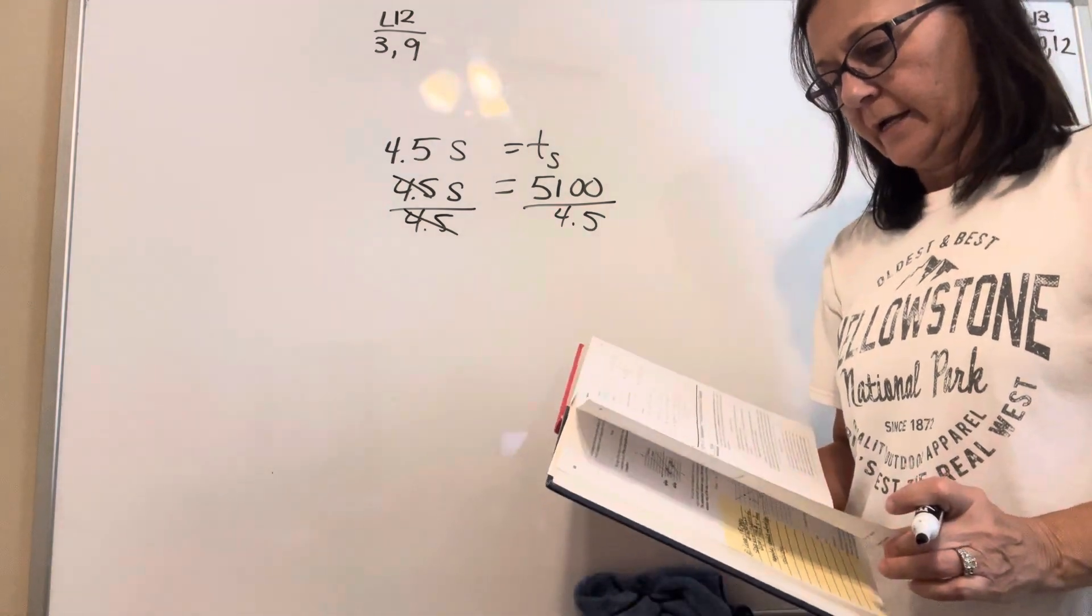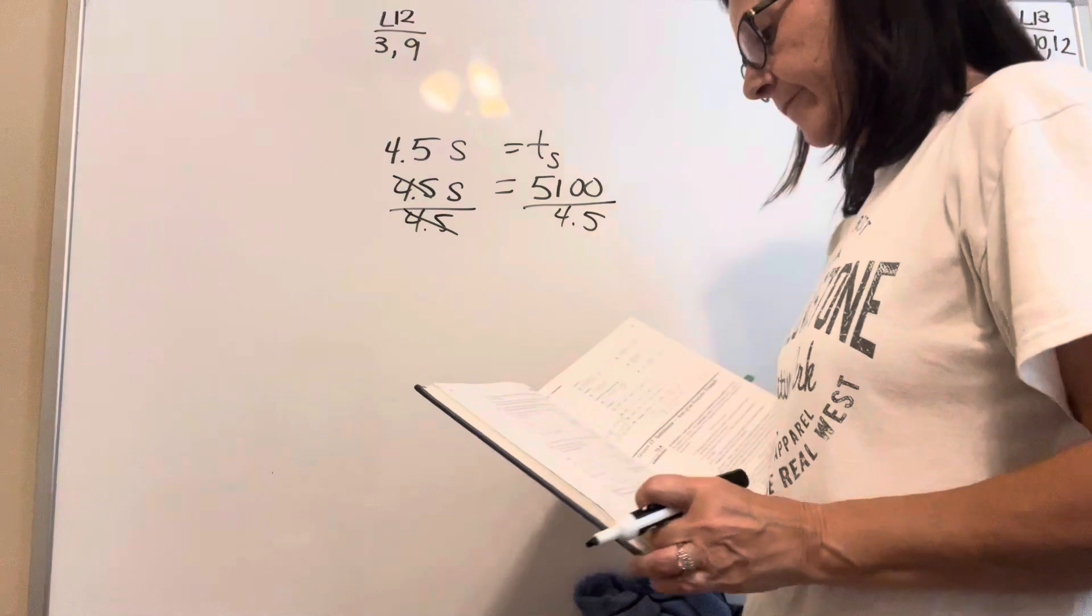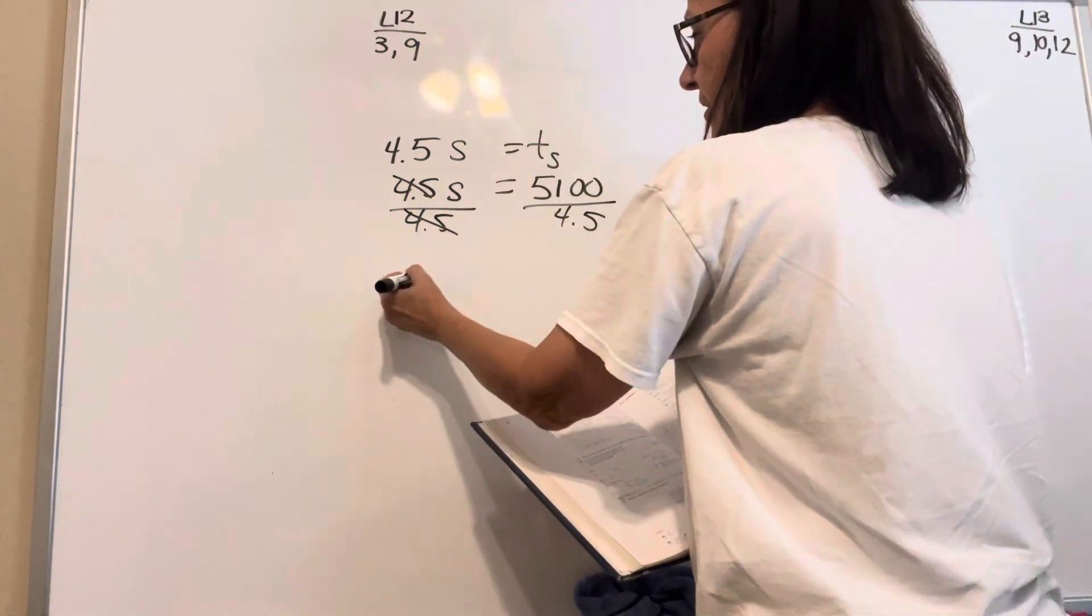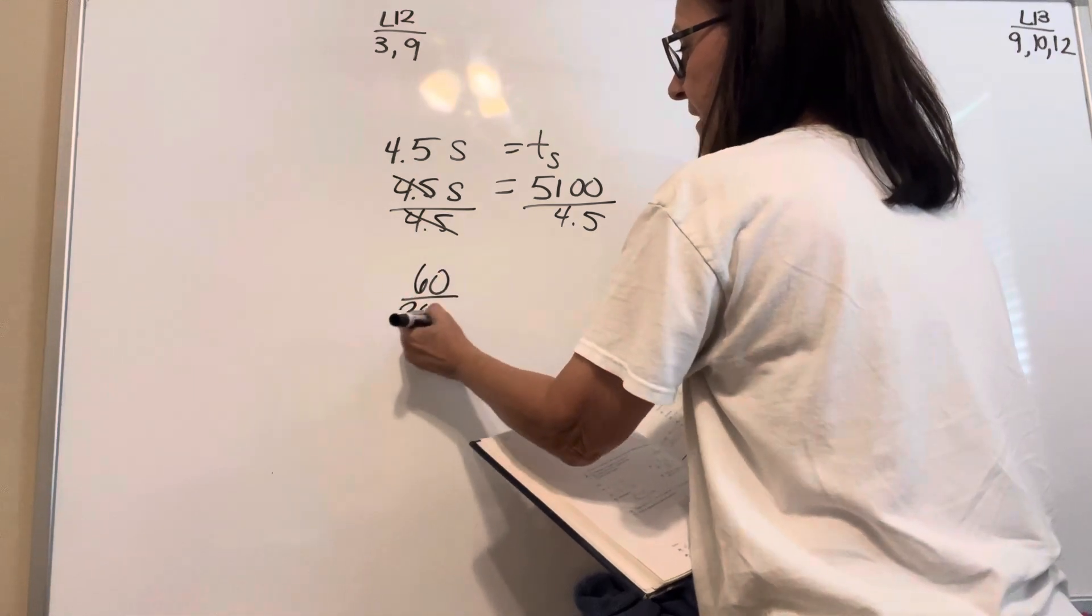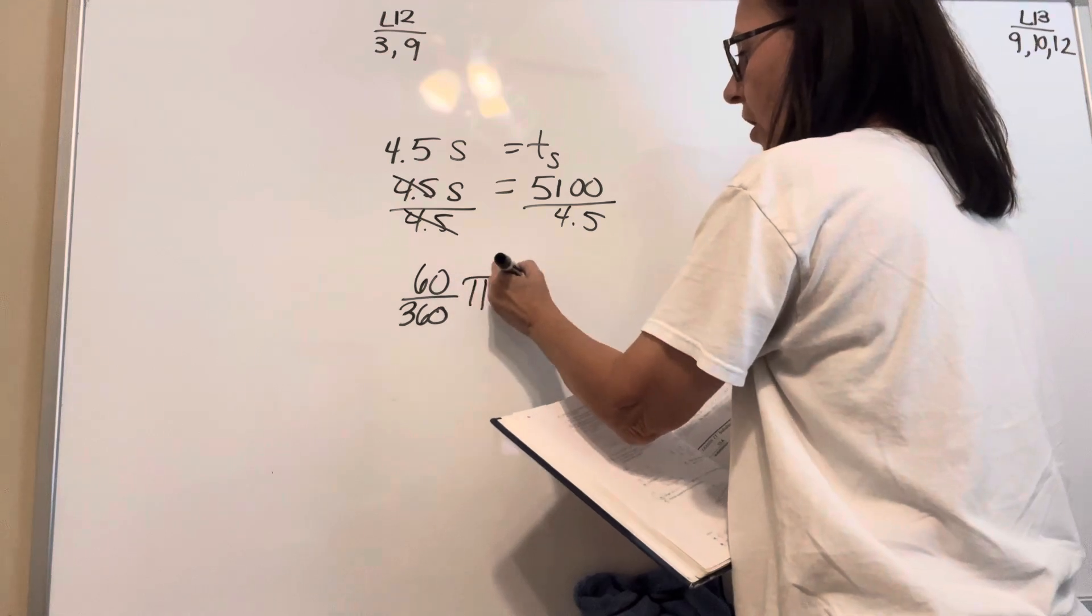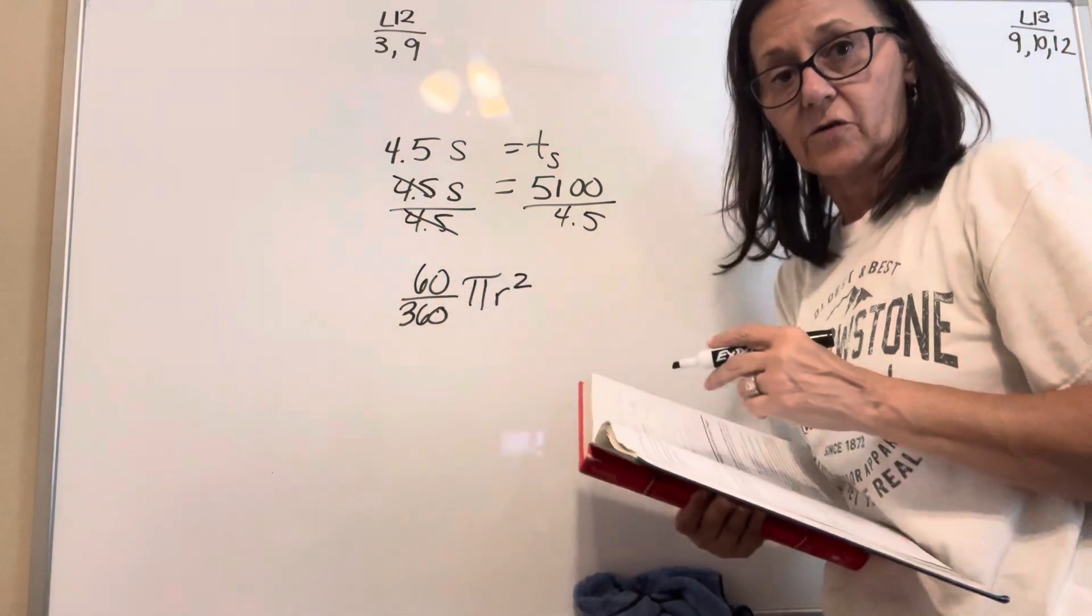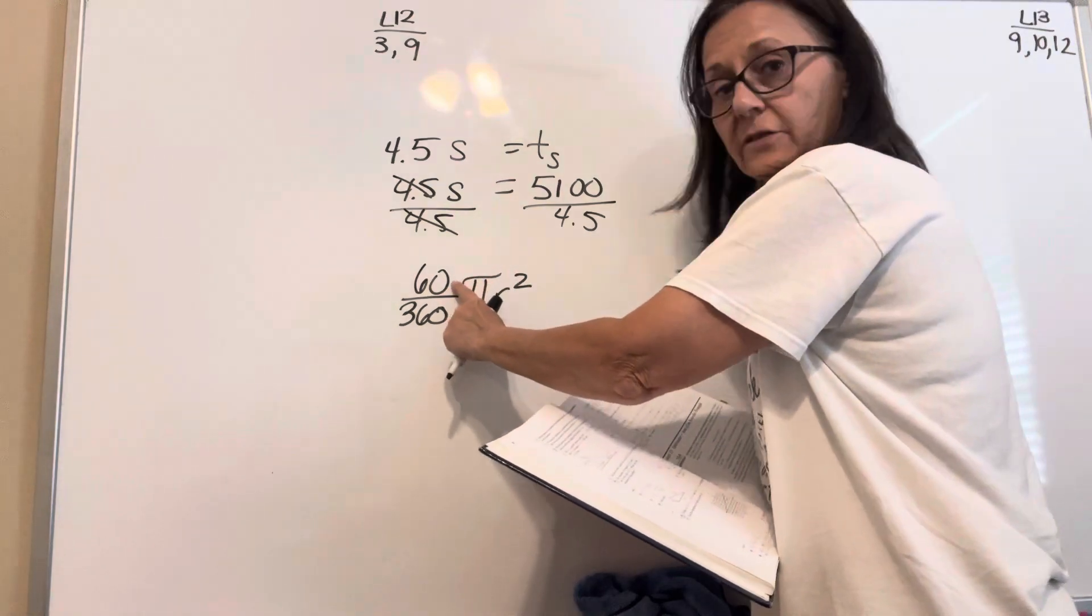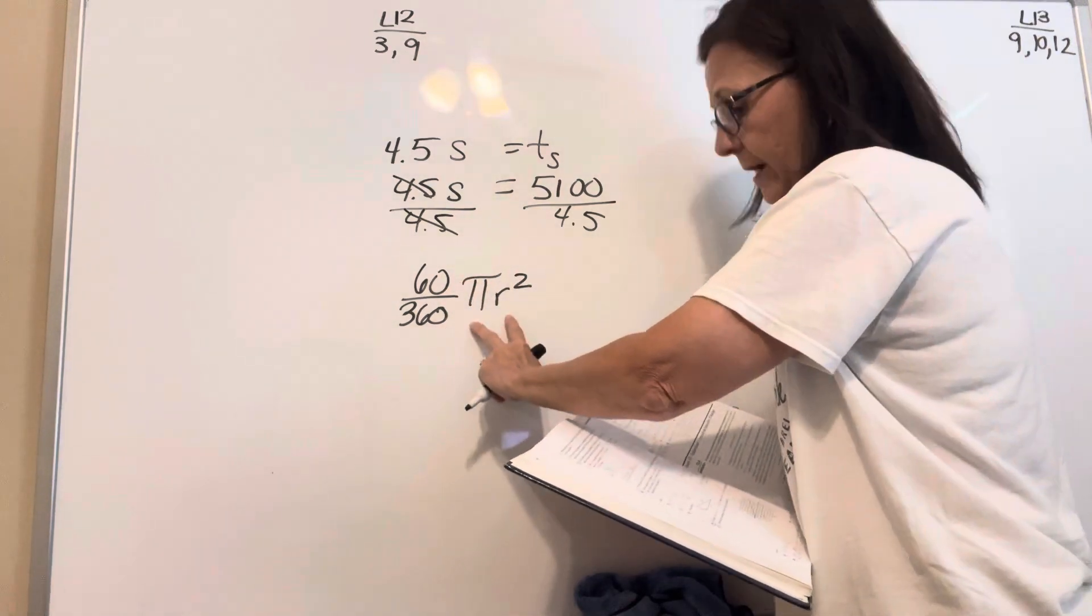All right, number nine. The area of a 60 degree sector—60 over 360, that's a sector, times pi r squared. That's the area of a circle. So you just multiply the central angle over all the way around times the area.